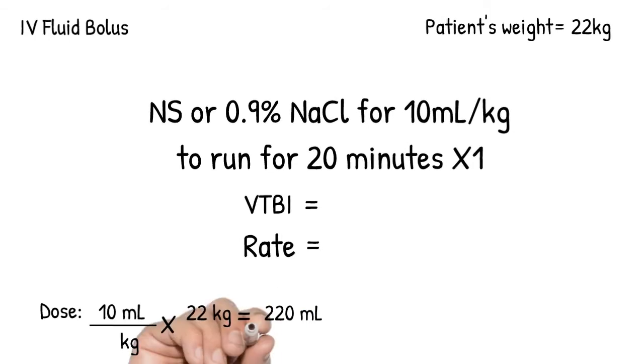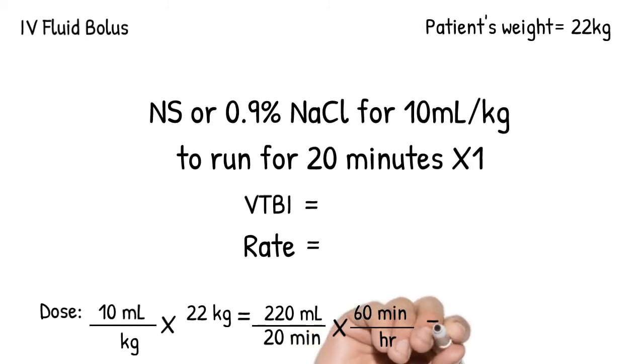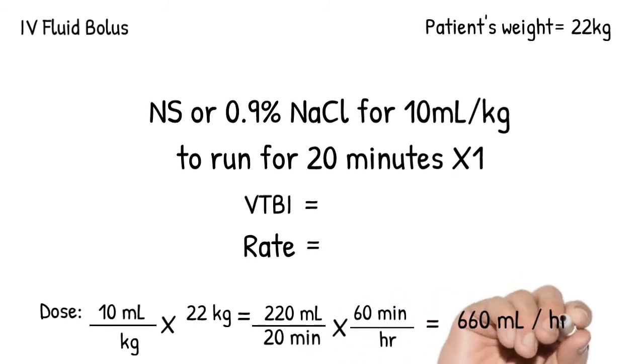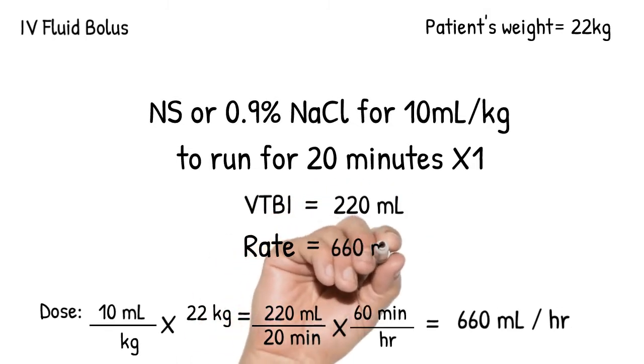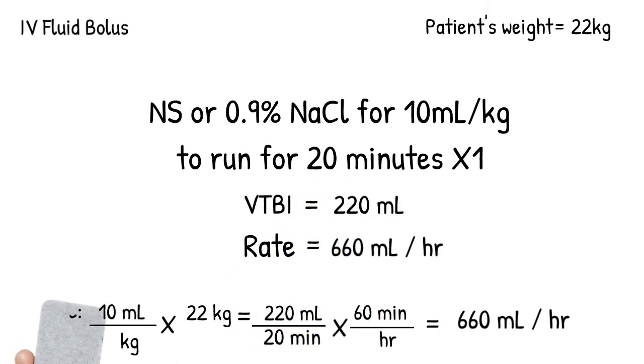Based on the order, we want to run 220 mls for 20 minutes and whatever process you use to find mls per hour, use it. Dimensional analysis is just one of them. We have 220 mls for volume and 660 mls per hour for the rate.